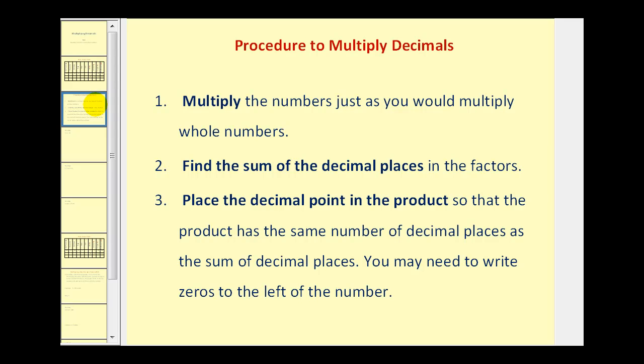Number one, multiply the numbers just as you would multiply whole numbers. Next, find the sum of the decimal places in the factors. Then, place the decimal point in the product so that the product has the same number of decimal places as the sum of the total number of decimal places. We may need to write zeros to the left of the number if needed.